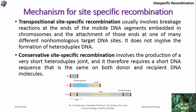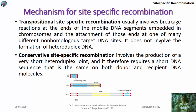Conservative site-specific recombination involves the production of very short heteroduplex joints and therefore requires a short DNA sequence that is the same on both the donor and the recipient. The presence of heteroduplex DNA is the major difference between these two mechanisms: in transpositional site-specific recombination there is no formation of heteroduplex, whereas in conservative site-specific recombination there is a formation of heteroduplex DNA.